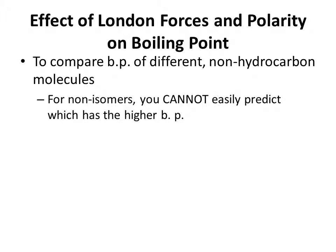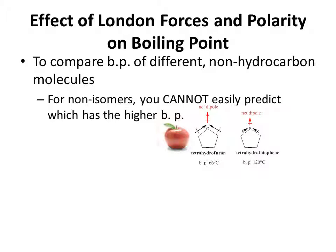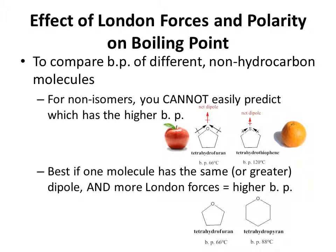If you compare the boiling points of compounds that are not isomers, you can't easily predict which one will have the higher boiling point. For example, compare tetrahydrofuran versus tetrahydrothiophene. Tetrahydrofuran has a boiling point of 66 degrees with a much larger dipole moment, but tetrahydrothiophene, even though its dipole moment is smaller, must have additional London forces through the extra electron pairs on sulfur to compensate, such that tetrahydrothiophene almost doubles the boiling point of tetrahydrofuran. You couldn't have predicted this — it's like comparing an apple to an orange. If you want to compare different molecules, it's best to compare ones with the same dipole, and then the one with larger London forces will have the higher boiling point.